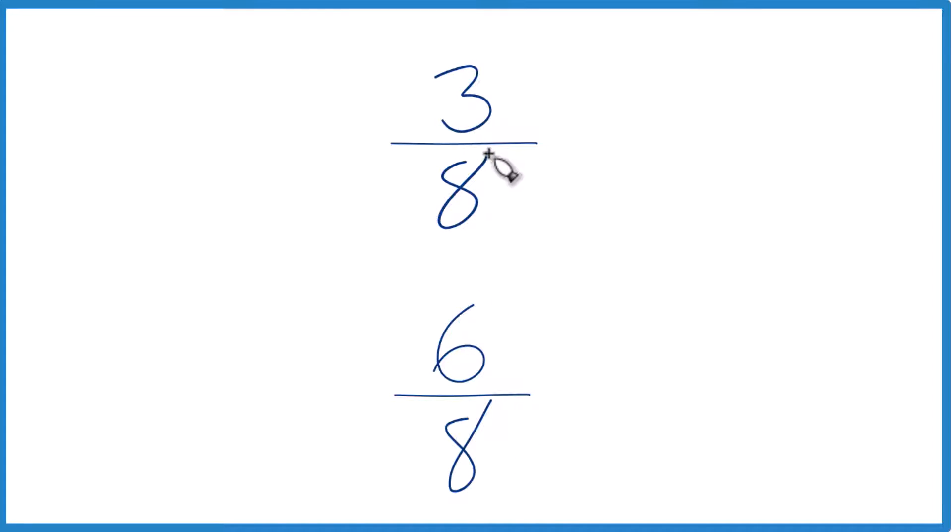Since we have the same denominator, both of these fractions it's 8, that makes it easy because all we need to do is compare the numerators. So we can see 6 is greater than 3, so 6 eighths is greater than 3 eighths.